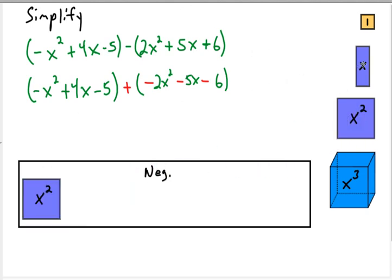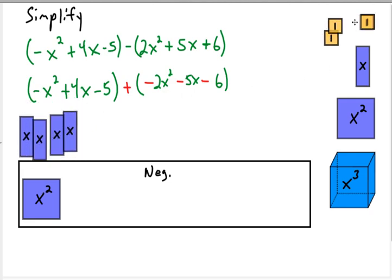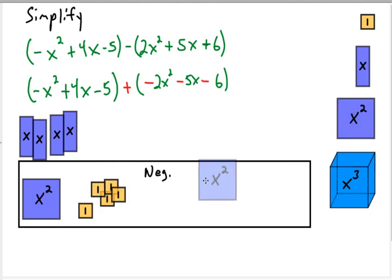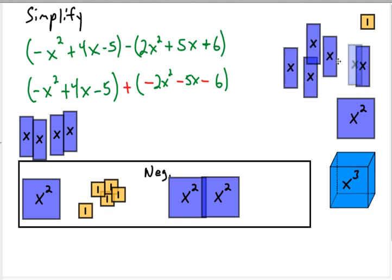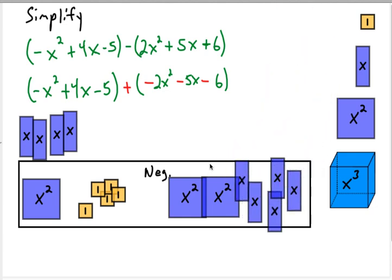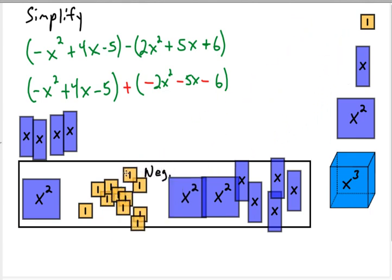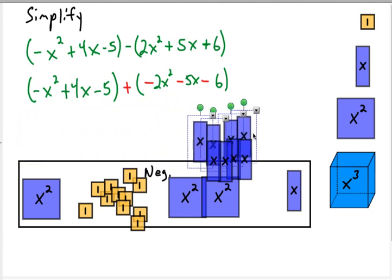We have a negative x squared, so let's put that over here. We have plus 4x — 1, 2, 3, and 4 — so those go here. I've got minus 5 ones — 1, 2, 3, 4, and 5 — so all those go in the negative area. And I have negative 2x squared — two more negative x squareds in here. Negative 5x — 1, 2, 3, 4, and 5 — and then negative 6 ones. The only canceling is going to be with the x values: 4 of the negative x's cancel with 4 of the positive ones, so we can get rid of all those.